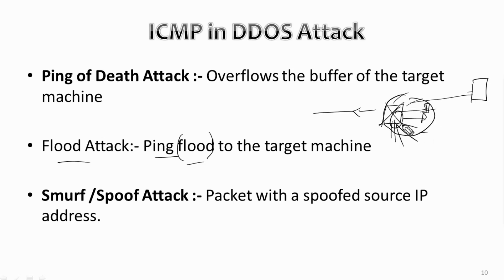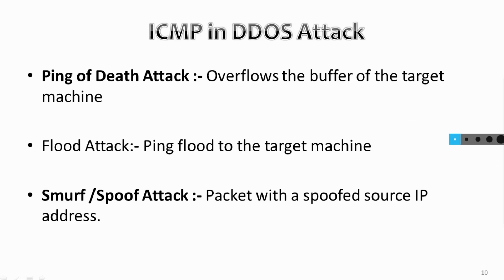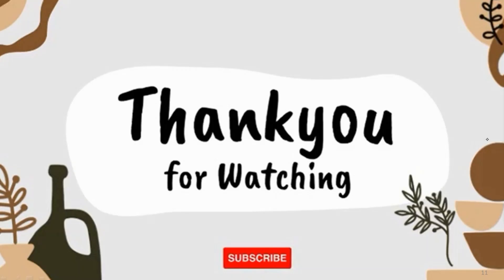There is also the Smurf attack, a type of attack in which the attacker sends an ICMP packet with a spoofed source IP address. These types of attacks generally work on older devices, similar to the Ping of Death attack. This is all about the ICMP protocol. I hope this video is helpful — please like, share, subscribe, and comment your suggestions. Thank you for watching.